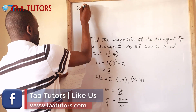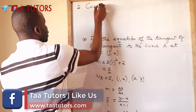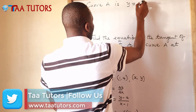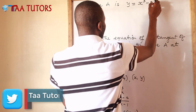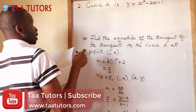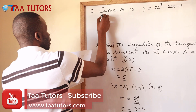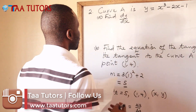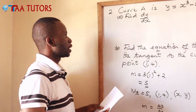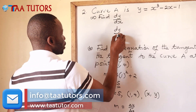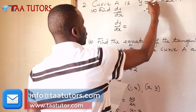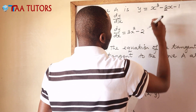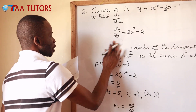Example 2: curve A is y equals x cubed minus 2x minus 1. Part a: find dy/dx. We bring 3 down: dy/dx equals 3x squared minus 2. We take the coefficient of x for the linear term, so it's minus 2.